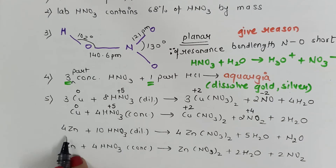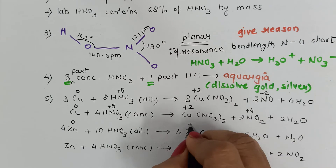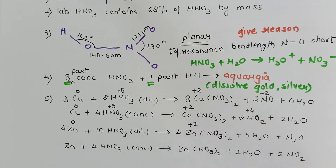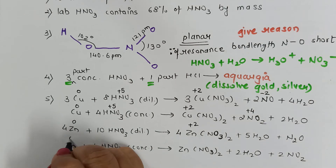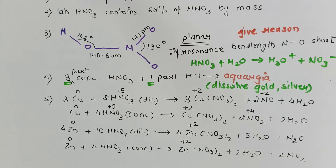Similarly, dilute nitric acid treated with zinc oxidizes zinc to zinc nitrate (zinc from 0 to +2 oxidation state). Concentrated nitric acid also oxidizes zinc to zinc nitrate. Remembering the changes in oxidation states helps understand these equations easily. One key point: whenever a metal reacts with nitric acid, you get the metal nitrate — that product is confirmed.